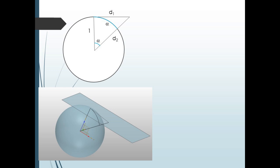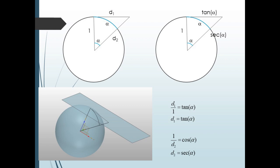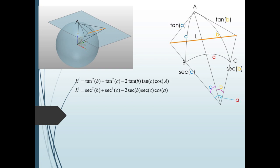In the plane containing the side arc, we have the image shown above. Now since d1 over 1 equals the tangent of our angle alpha, the top line has a length tangent alpha. Similarly, 1 over d2 equals the cosine, so taking the reciprocal, d2 equals the secant of alpha. So now create a tangent plane at vertex A of a triangle on a unit sphere and project sides little b and c onto this plane.